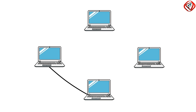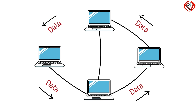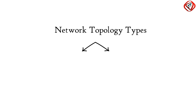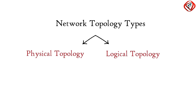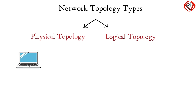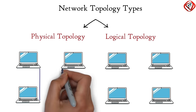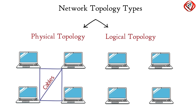Network topology is how computers connect or relate to one another in a computer network. It is of two types: physical topology and logical topology. Physical topology describes the way computers connect with the help of cables, while logical topology describes the way data flows from one computer to another within a computer network.